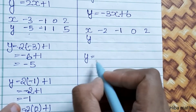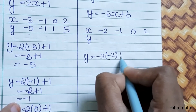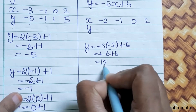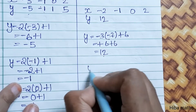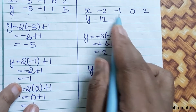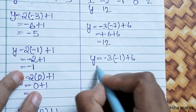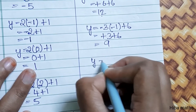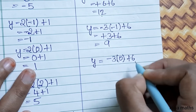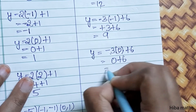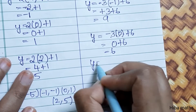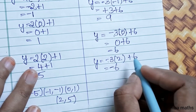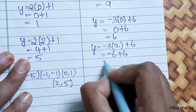For Line 2, when x is minus 2: y is equal to minus 3 into minus 2 plus 6, that is 6 plus 6, so y equals 12. When x is minus 1: y is equal to minus 3 into minus 1 plus 6, that is 3 plus 6, so y equals 9. When x is 0: y is equal to minus 3 into 0 plus 6, so y equals 6. When x is 2: y is equal to minus 3 into 2 plus 6, that is minus 6 plus 6, so y equals 0.